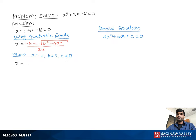Comparing the original equation with the general equation, we get a equal to 1, b equal to 5, and c equal to 8. Substituting these values into the quadratic formula, we get x equal to negative 5 plus or minus square root of 5 squared minus 4 times 1 times 8, over 2 times 1.